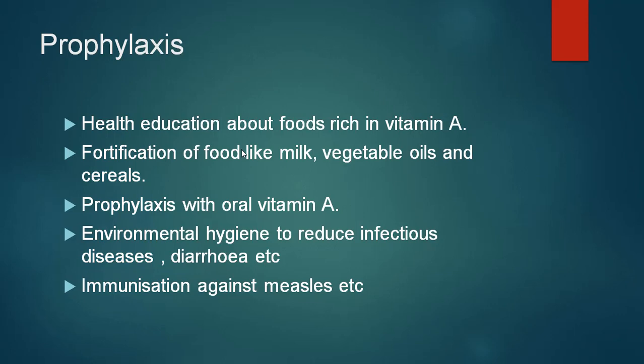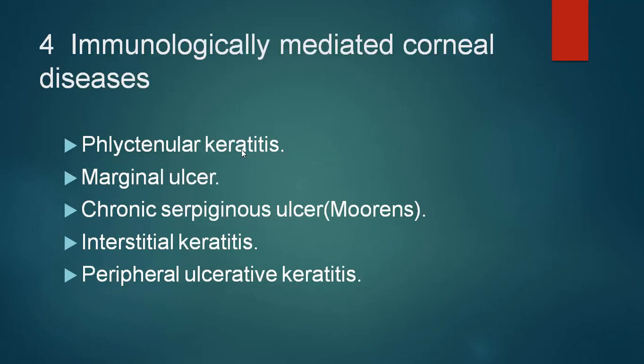The fourth group of disorders are immunologically mediated corneal diseases. These include phlyctenular keratitis, phlyctenular conjunctivitis, marginal ulcer, chronic serpiginous ulcer or Mooren's ulcer, interstitial keratitis, and peripheral ulcerative keratitis.